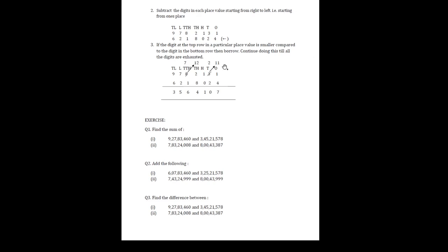Let us see how the subtraction is done. In ones place the digit on top is 1, whereas the bottom digit is 4. Since 4 is bigger than 1, we cannot subtract. So from the tens digit 3 — whose actual value is 30 — we borrow 10, making it 20. We write 2 in tens place and add the borrowed 10 to 1, making 11. From 11 we subtract 4 and get 7.